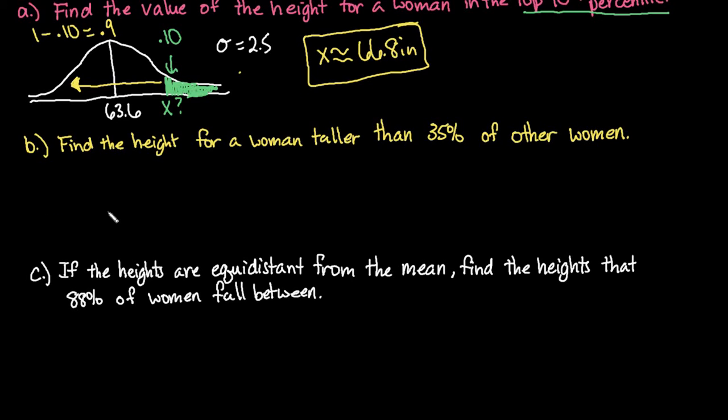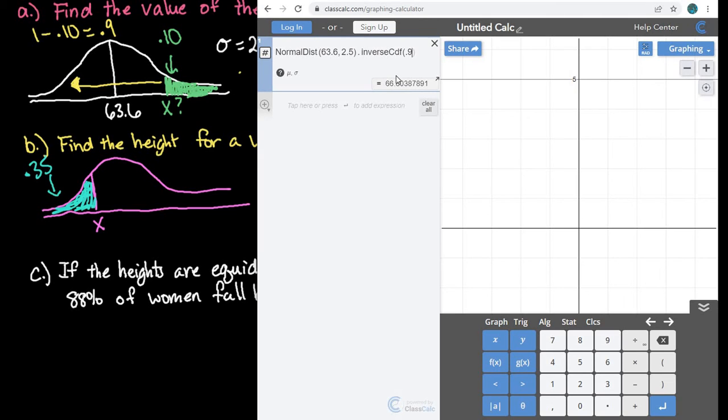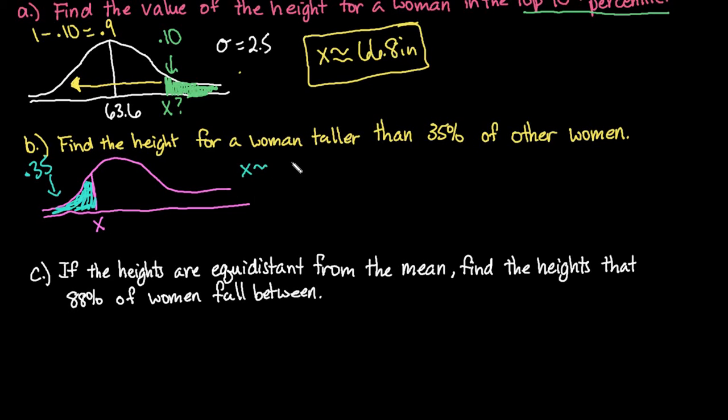Looking at our next one, find the height for a woman taller than 35% of other women. So what we're doing is we're trying to find the x value that corresponds to an area of 35%, which we would put in as 0.35. Since this is already area to the left, we do not have to worry about subtracting this time. So we would just come in here, and we would change our 0.9 to 0.35, and we can see that someone who is 62.6 inches tall would be the height that is taller than 35% of other women. So that was 62.6 inches.